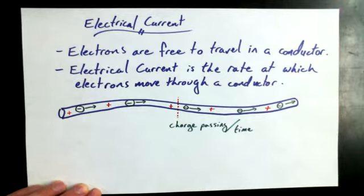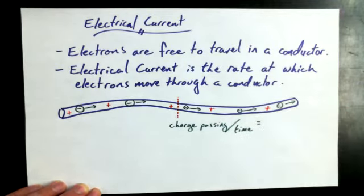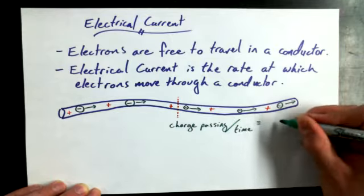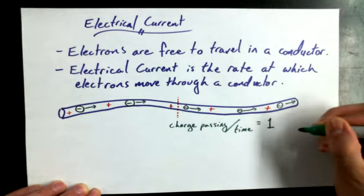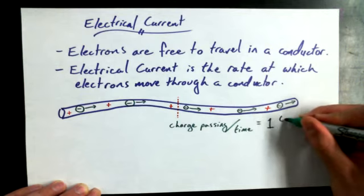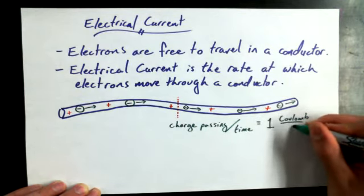How much charge is passing per unit of time? And we could talk about that as being, when we talk about units of charge, does anybody know what the unit we use for charge is? Maybe you remember from grade 9? It starts with a C. It is a coulomb. So we would talk about if one unit of charge passed per second, we would talk about one coulomb going past every second.